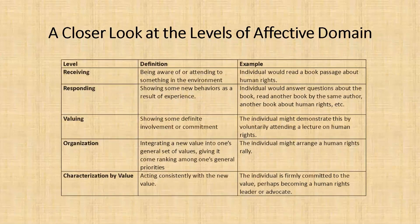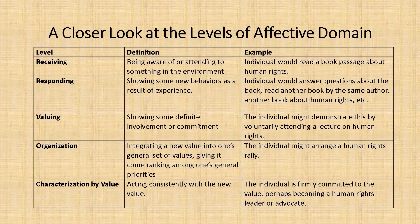A closer look at the levels of affective domain: For receiving, an individual would read a book passage about human rights. Through responding, an individual would read another book about human rights, watch videos about human rights, or ask other persons about human rights. For valuing, the individual will voluntarily attend a lecture on human rights. For organization, the individual will attend human rights conferences or conventions rather than attending other conferences. For characterization by value, the individual is now firmly committed and perhaps becoming a human rights leader or advocate.